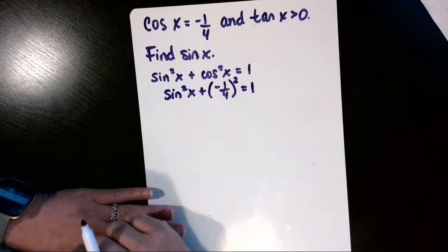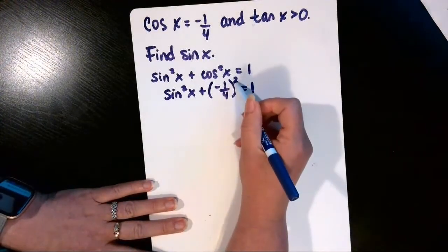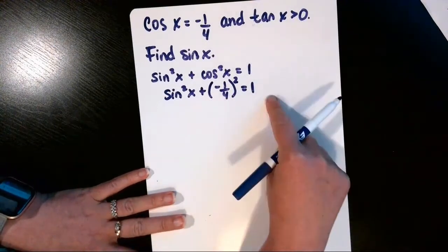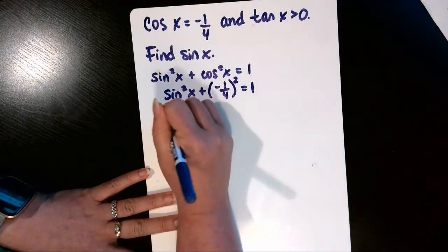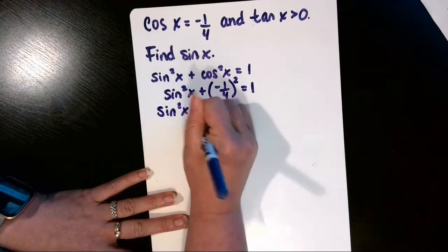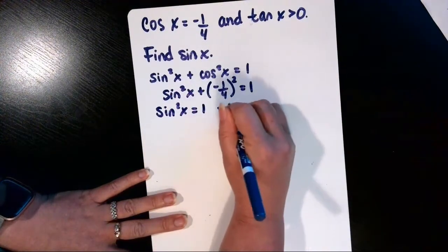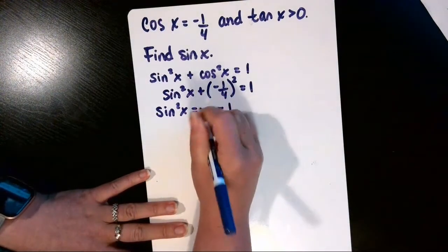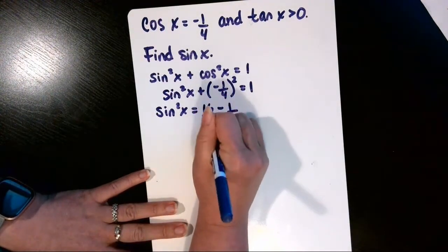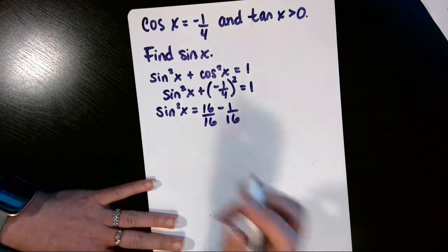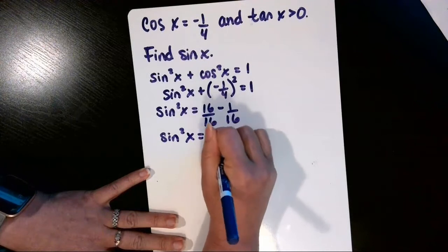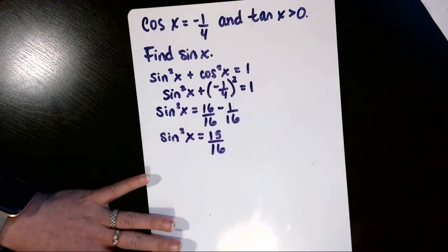So we want to get sine of X by itself, so we're going to square this negative 1 fourth to get positive 1 sixteenth and then subtract that over to the other side. So sine squared X is equal to 1 minus 1 over 16, and we need a common denominator to combine those fractions, and that means then that the sine squared X is equal to 15 over 16.